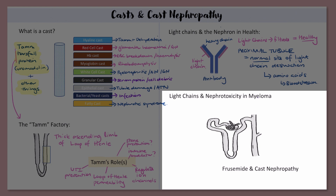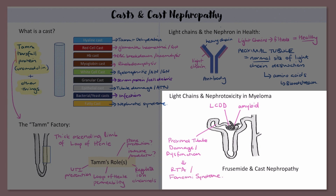But in myeloma, light chains can damage the nephron in a number of ways. Firstly, they can deposit in the glomerulus, either as light chain deposition disease, or if they change shape and become fibrils, they can form amyloid deposits in the glomerulus. In the tubules, they can also cause dysfunction — if the proximal tubule is taking up large numbers of light chains, this can cause toxicity within the proximal tubule cells, leading to renal tubular acidosis and/or Fanconi syndrome. And lastly, if the proximal tubule becomes saturated and overwhelmed, some light chains will make their way into the distal tubule, which can lead to cast nephropathy.